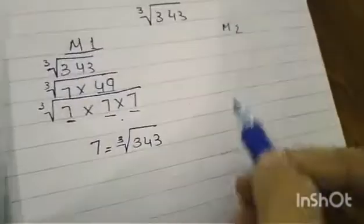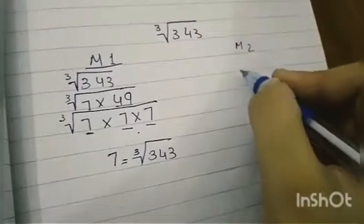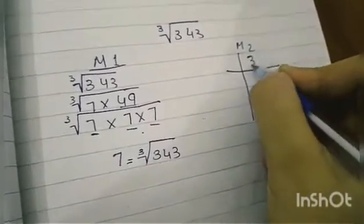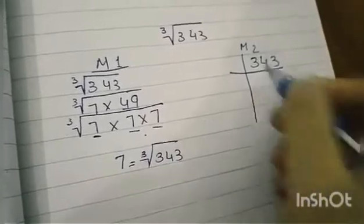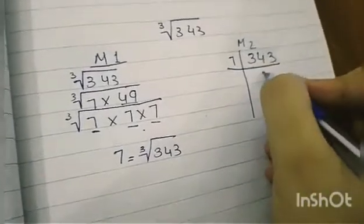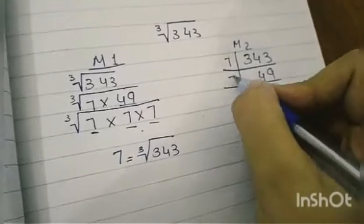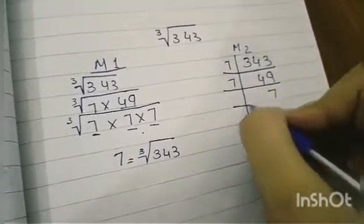Now, on to method 2. Method 2 is basically finding the LCM. 343. 7 times 49 is 343. 7 times 7 is 49.